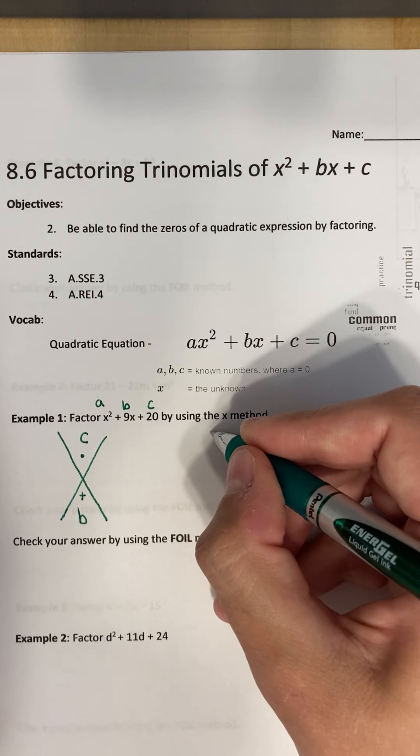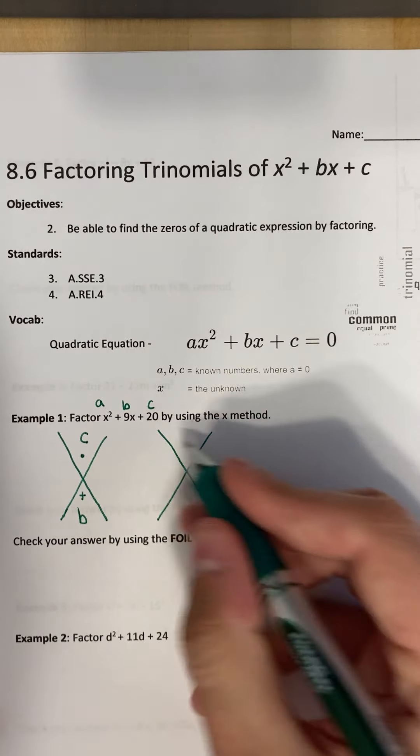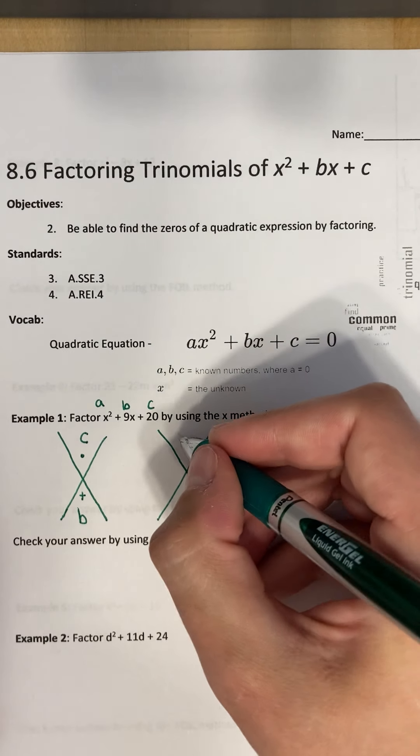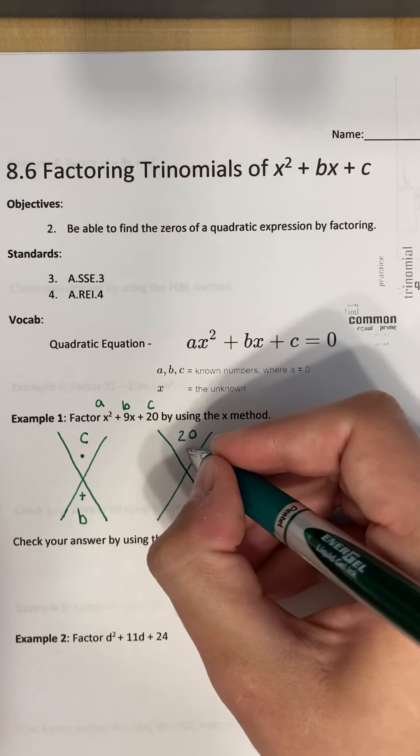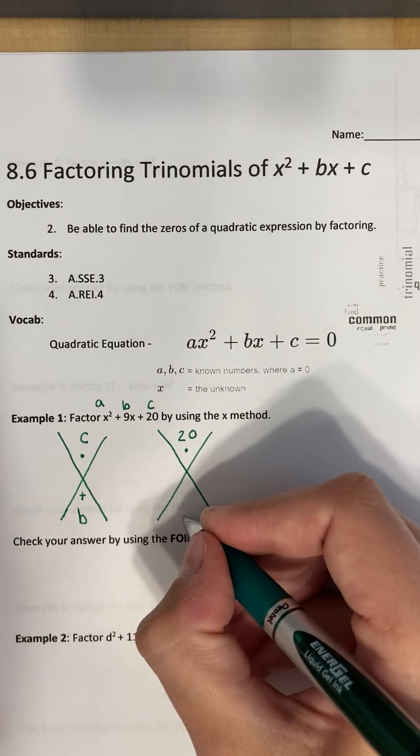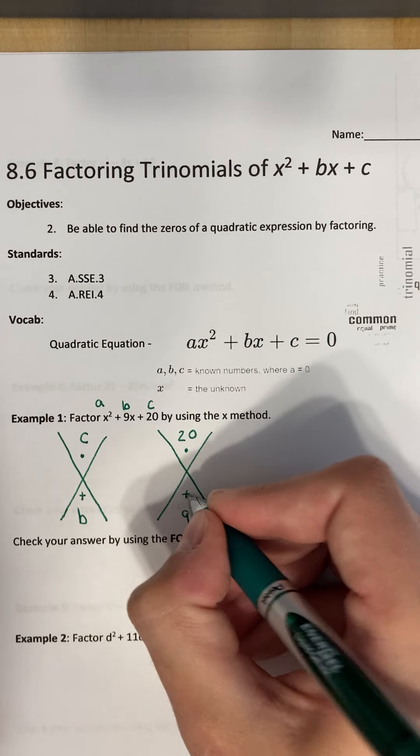So let's go ahead and fill in the numbers that we have. So what is c? Well, c is 20. I'm going to keep this dot. And b is 9. I'll put that right there. And then we're going to keep this addition.